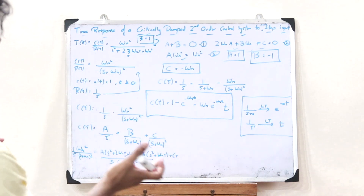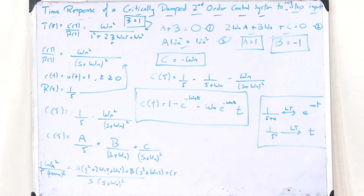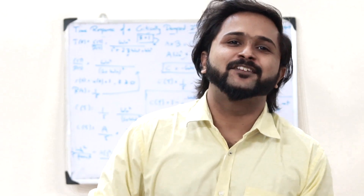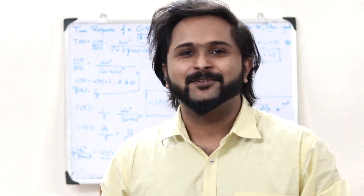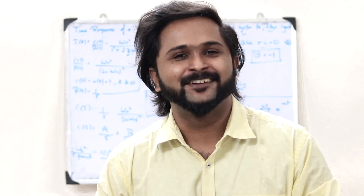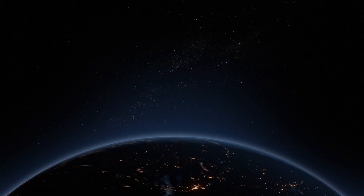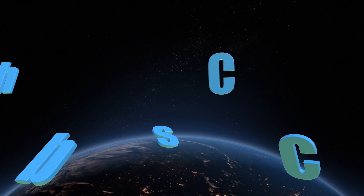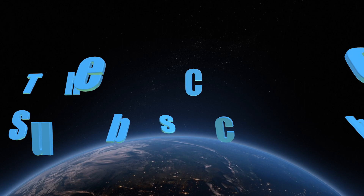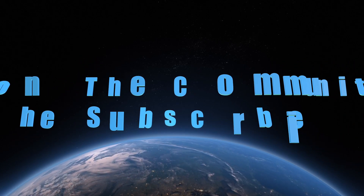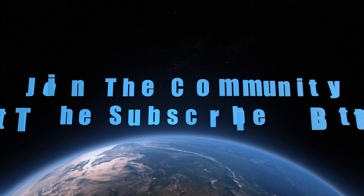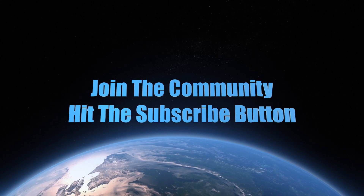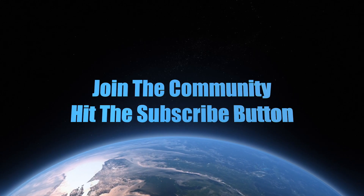Very simple, guys — as simple as that. I hope you now have a clear understanding of the time response of a critically damped second order control system to a unit step input. If you found this video informative, please hit the like button and subscribe. We'll be discussing further topics in upcoming videos. Stay tuned, stay subscribed. Until next time, I'll see you in the next video. Thank you.